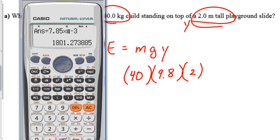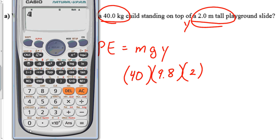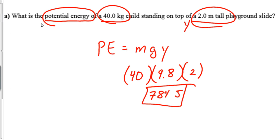That's all we've got to do to get an answer. Let's see, 40 times 9.8 times 2 equals 784, and the unit is joule. And so that is the answer to that problem. That's not too bad. Let's go on and do example problem B.